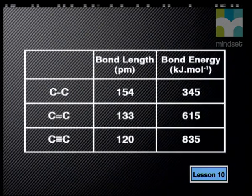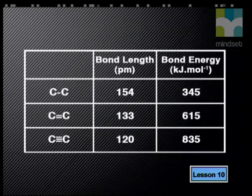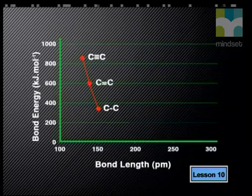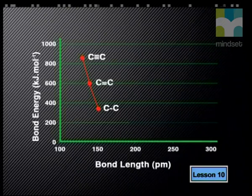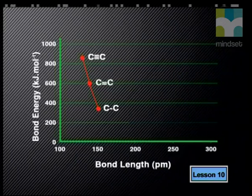Let's look at measurements for bond length and bond energy for ethane, ethene, and ethyne to see if they confirm what the model suggests. Chemists cannot measure the energy needed to break the bond of a single molecule, but they can measure the energy required to break a mole of molecules. For this reason, bond energy is measured in kilojoules per mole. When a graph of bond energy is drawn for these hydrocarbon molecules, the bond energy increases as the number of bonds increases, and also increases as the bond length decreases — just as the model predicted.